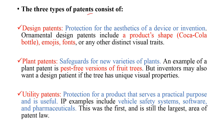There are three types of patents. Design patents relate to design — for example, the Coca-Cola bottle design or emojis — protecting the aesthetics of a device or invention. Plant patents safeguard new varieties of plants, for example pest-free versions of fruit trees. Utility patents provide protection for a product that serves a practical purpose, such as vehicle safety systems, software, and pharmaceuticals.